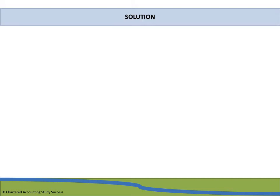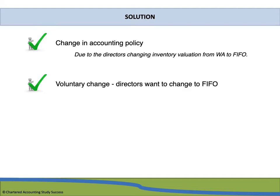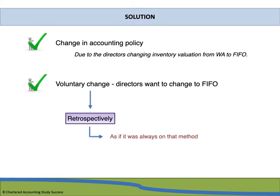Based on the information, we know there is a change in accounting policy — the directors are changing the inventory valuation method from weighted average to FIFO. We also know this is a voluntary change, as the directors had the option to use either method and chose to change. Therefore, we must apply this change retrospectively, as if the stock has always been accounted for on the FIFO method.